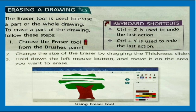Erasing a drawing: The Eraser tool is used to erase a part or the whole drawing. To erase a part, follow these steps: choose the Eraser tool from the Brushes panel, change the size of the eraser by dragging the thickness slider, hold down the left mouse button and move it over the area you want to erase. Keyboard shortcuts: Ctrl+Z is used to undo the last action and Ctrl+Y is used to redo the last action.